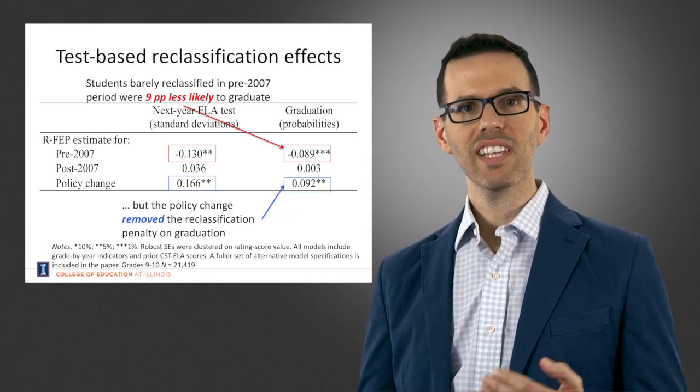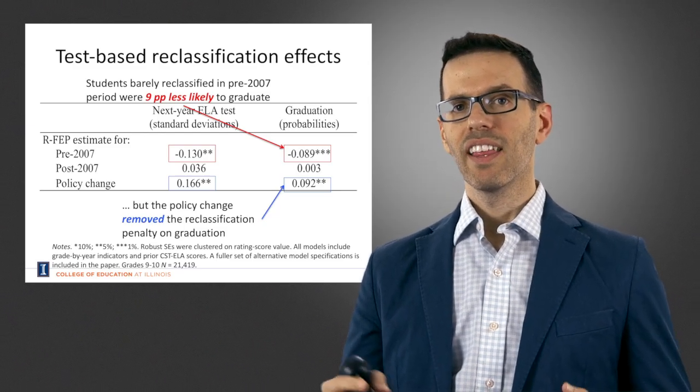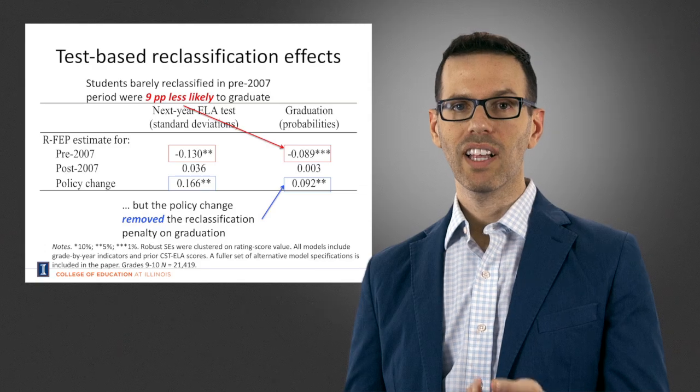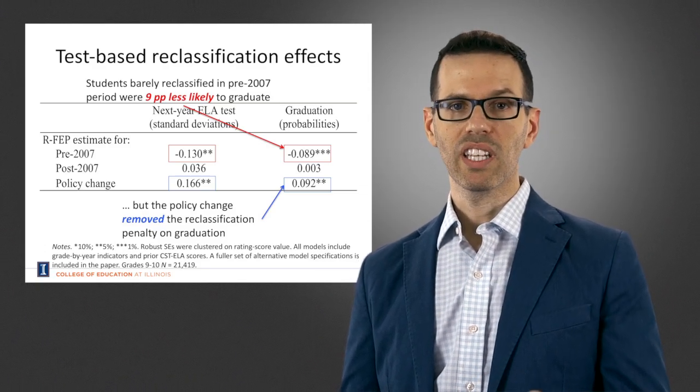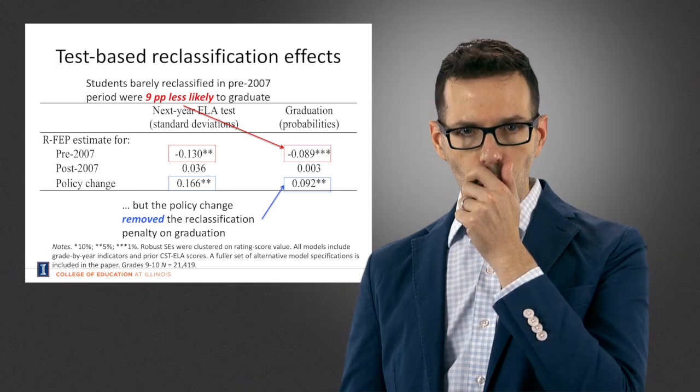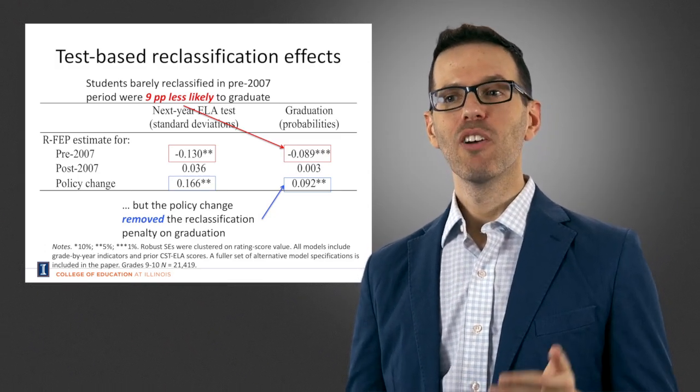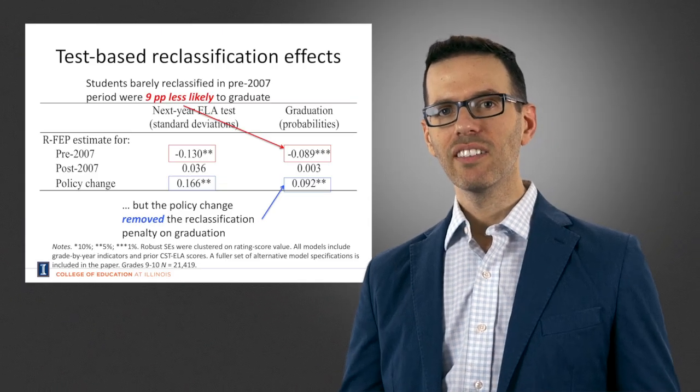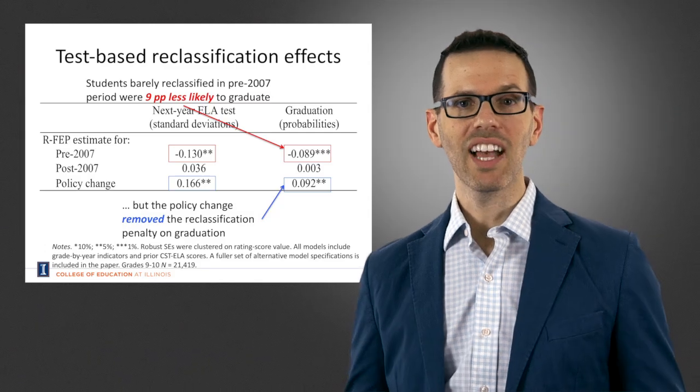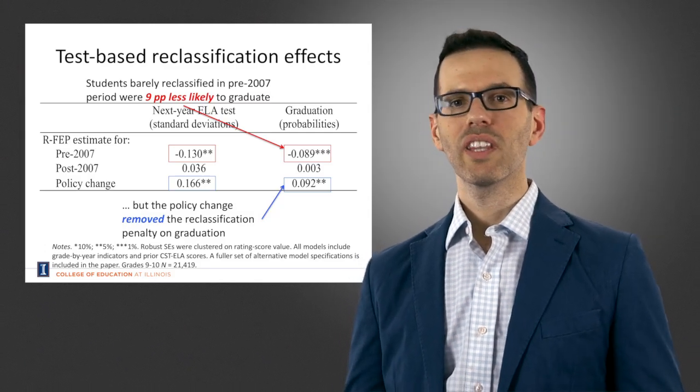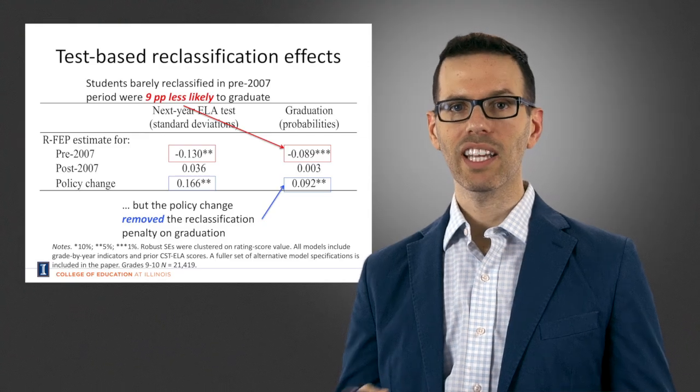Again what we see is the same pattern where once the criteria were made more difficult, there's no effect of reclassification on graduation, just like there was no effect that we could detect on English language arts performance. But what we see is that the change in the criterion removed essentially the reclassification penalty on graduation, so that there's no effect of reclassification on graduation, either negative or positive.